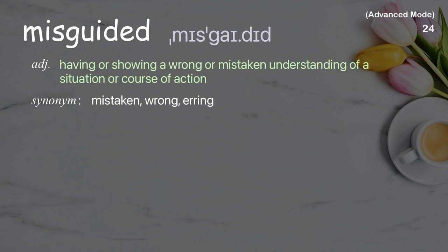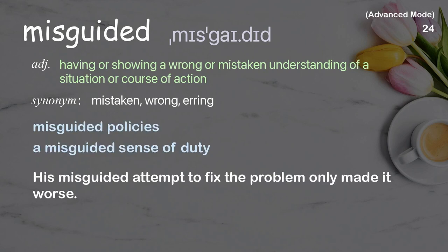Misguided: Having or showing a wrong or mistaken understanding of a situation or course of action. Examples: Misguided policies. A misguided sense of duty. His misguided attempt to fix the problem only made it worse.